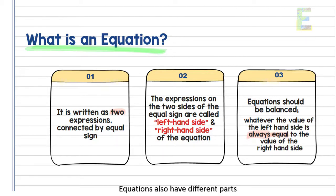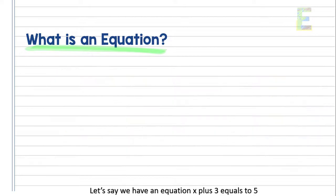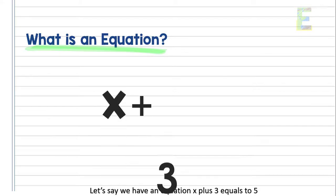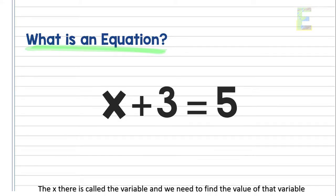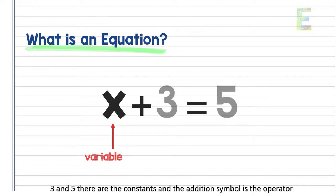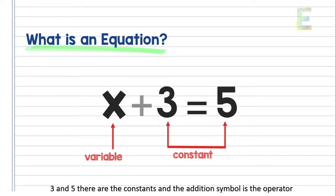Equations also have different parts. Let's say we have an equation x plus 3 equals to 5. The x there is called the variable and we need to find the value of that variable. 3 and 5 are the constants and the addition symbol is the operator.